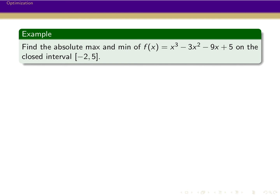Here's an example. We have a cubic, x cubed minus 3x squared minus 9x plus 5, and we're trying to find the absolute maximum just on the interval minus 2 to 5. We're going to look for critical points, then check the value at the critical points and at the ends of the interval. Let's start by getting the derivative — this is a cubic, so it's straightforward. We get 3x squared minus 6x minus 9.